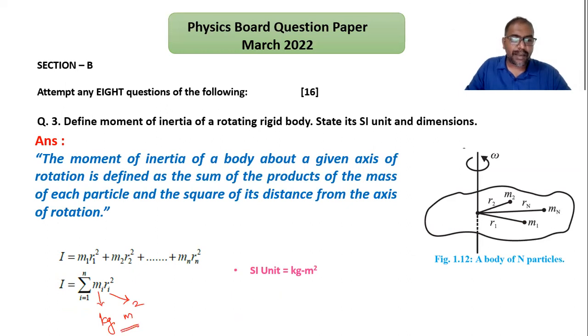And the dimension: kg means mass raised to one, and meter means length raised to two. So this is the dimension, L²M¹. This is the dimension of moment of inertia.